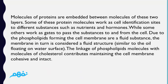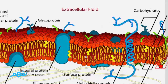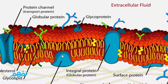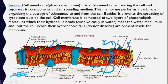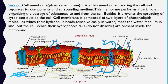Molecules of proteins are embedded between the two phospholipid layers. Some of these protein molecules work as cell identification sites for different substances such as nutrients and hormones, helping the cell identify them. Some other proteins work as gates to pass substances to and from the cell. These peripheral proteins act as transporters, moving molecules in and out of the cell.